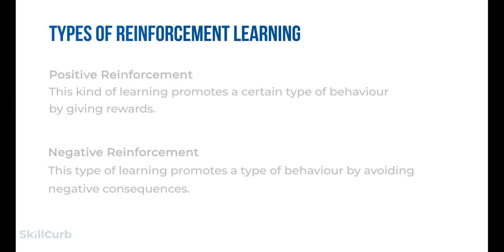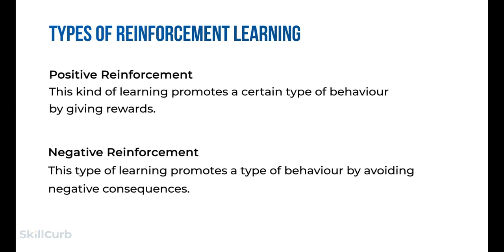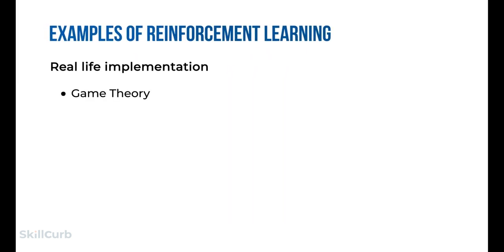Two kinds of reinforcement learning methods exist. Positive reinforcement is defined as an event that occurs because of specific behavior — it increases the strength and frequency of behavior and impacts positively on the action taken by the agent. Negative reinforcement is defined as the strengthening of behavior that occurs because of a negative condition which should have been stopped or avoided, helping to define minimum standards of performance. Real-life implementations include game theory, robotics, GPS, and industrial logistics.